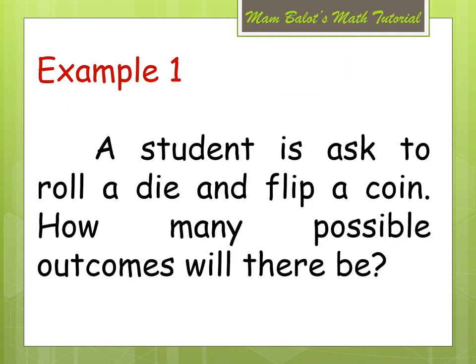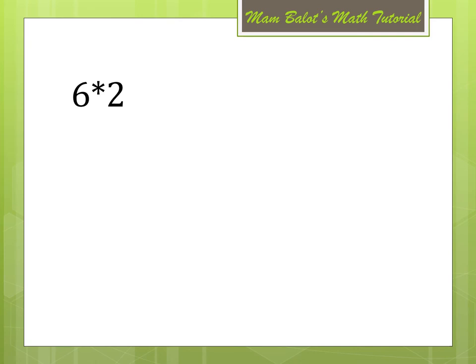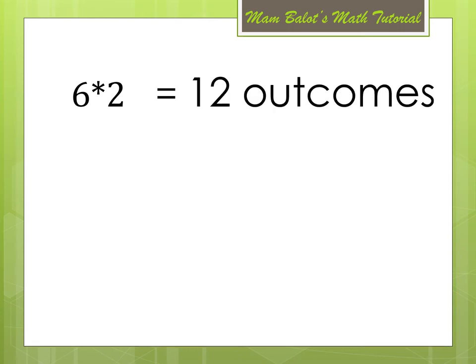For example, if a student is asked to roll a die and flip a coin, how many possible outcomes will there be? In rolling a die, we have 6 ways, and in flipping a coin, we have 2 ways. So therefore, we have 6 times 2, which is equal to 12 outcomes.